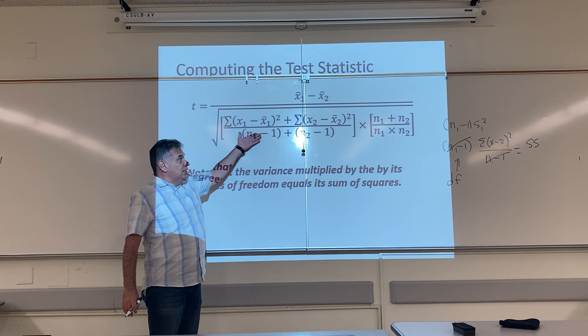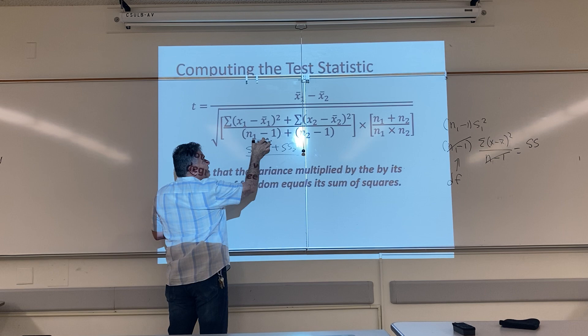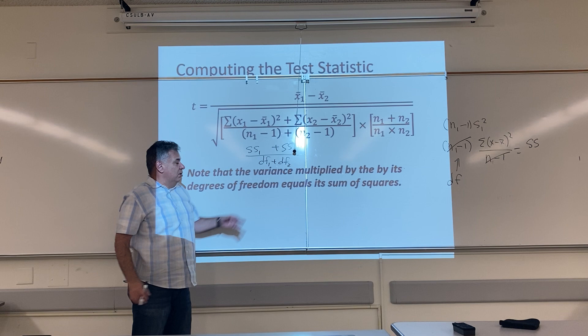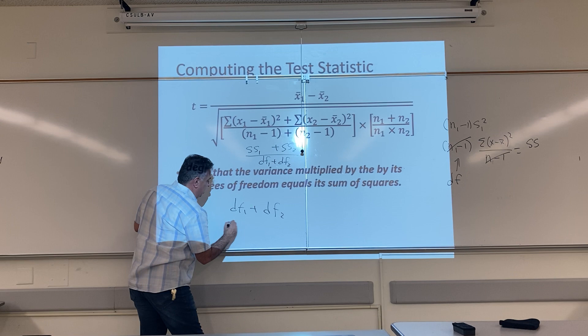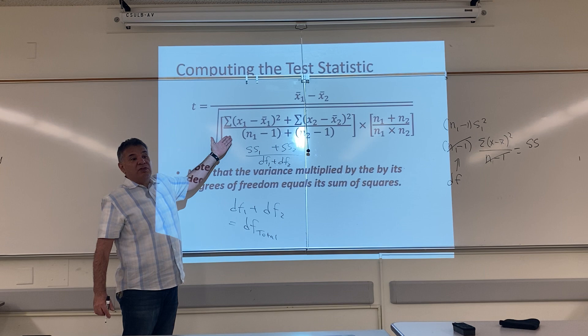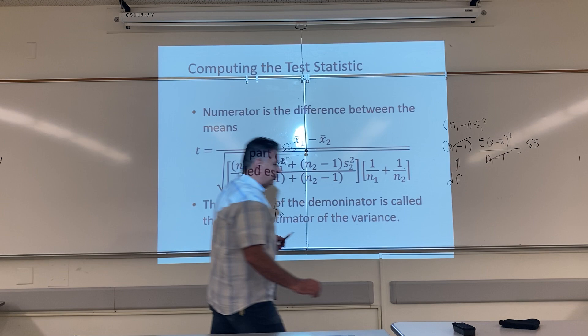So I wanted to rewrite this formula. This would be the sum of squares for the first group plus the sum of squares for the second group, divided by the degrees of freedom from the first group plus the degrees of freedom from the second group. What does that equal? The degrees of freedom from the first group plus the degrees of freedom from the second group equals the total degrees of freedom.